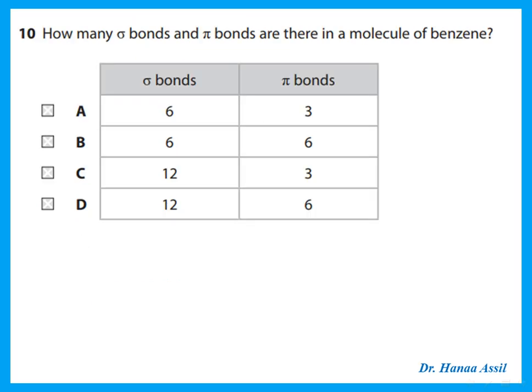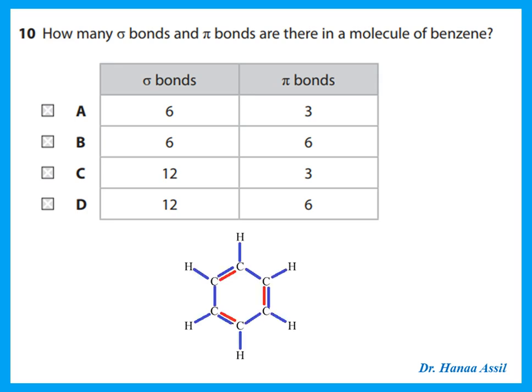How many sigma and pi bonds are there in a molecule of benzene? Benzene has alternating double bonds in the Kekulé structure. All single bonds are sigma, and each double bond contains one sigma plus one pi. With three double bonds in benzene, there are three pi bonds. Counting all the C–C and C–H single bond sigmas plus one sigma per double bond gives a total of 12 sigma bonds and 3 pi bonds.